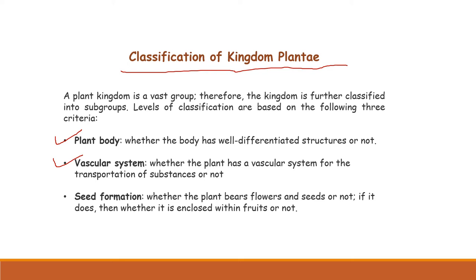The third important criterion is seed formation — whether plants produce seeds, flowers, and fruits. Based on these three criteria — plant body, vascular system, and seed formation — the plant kingdom is classified.